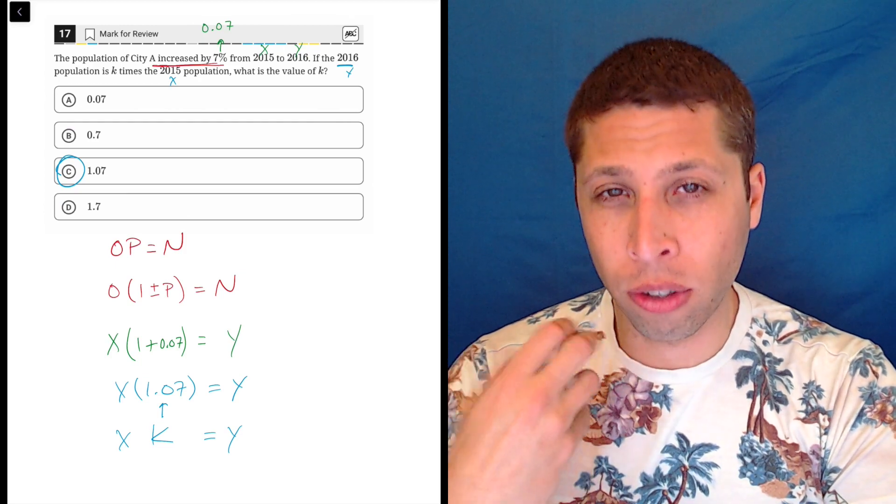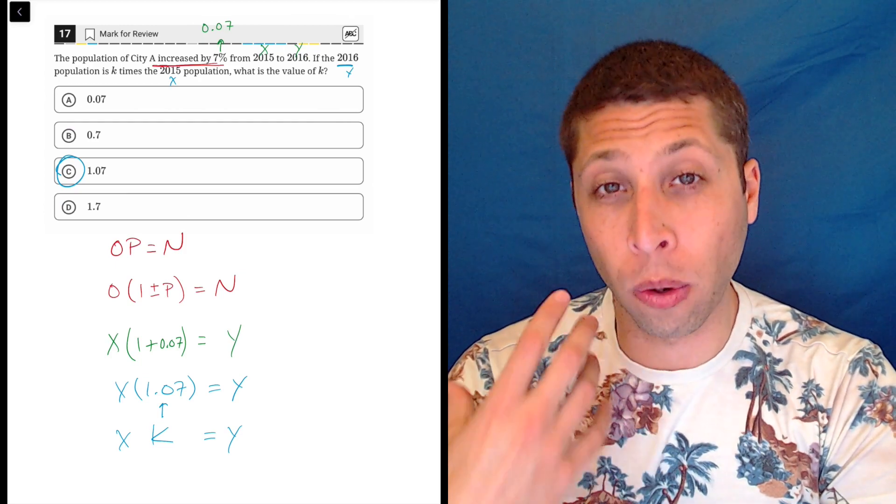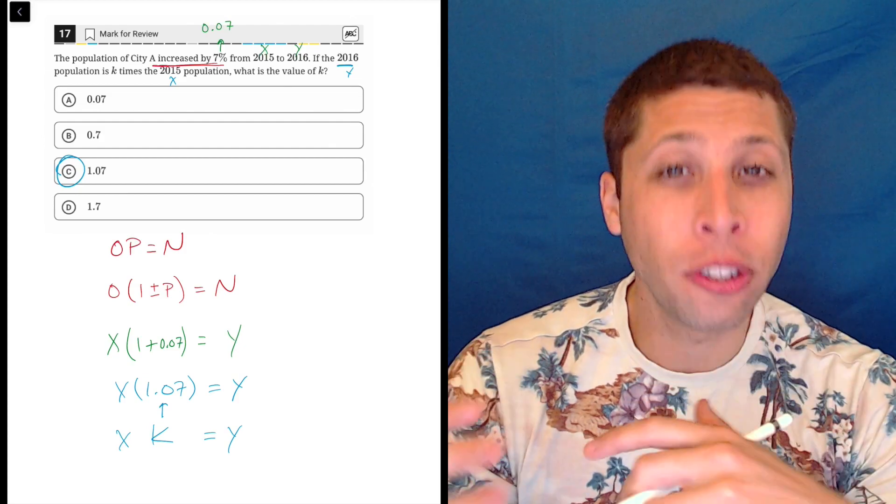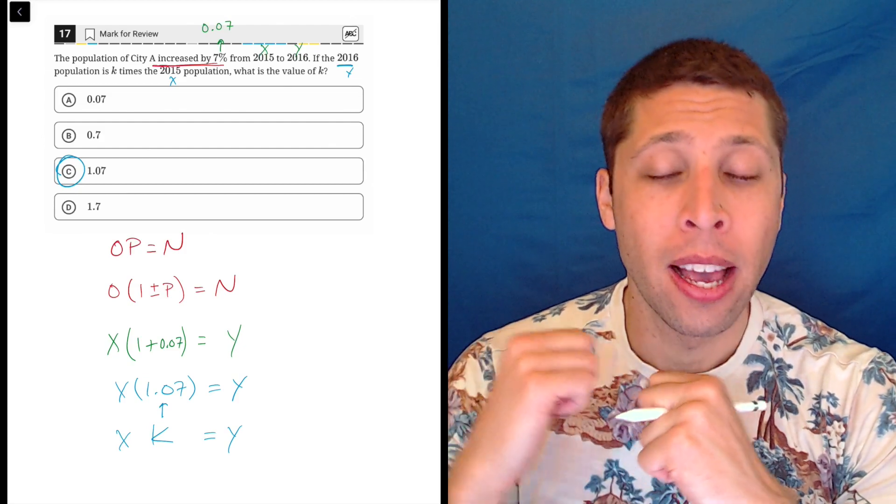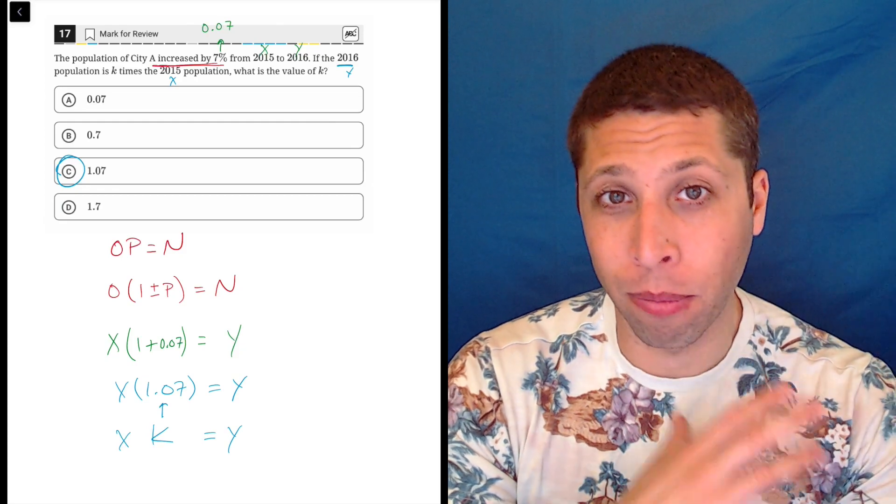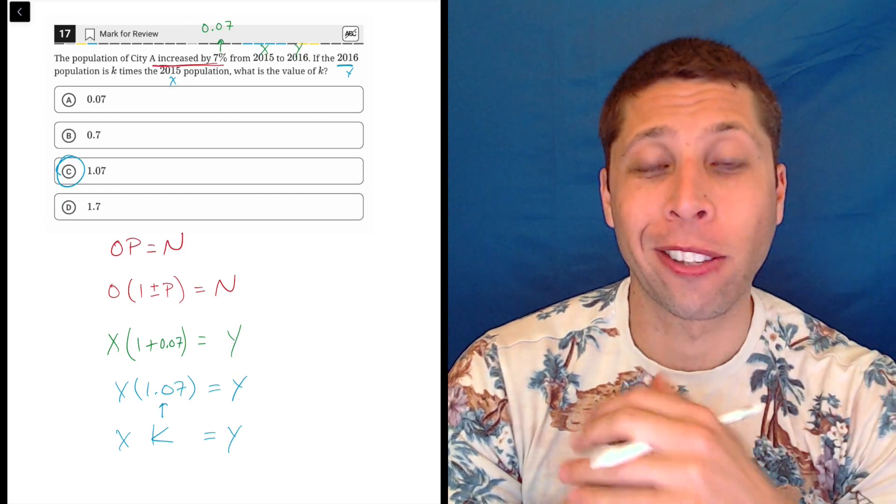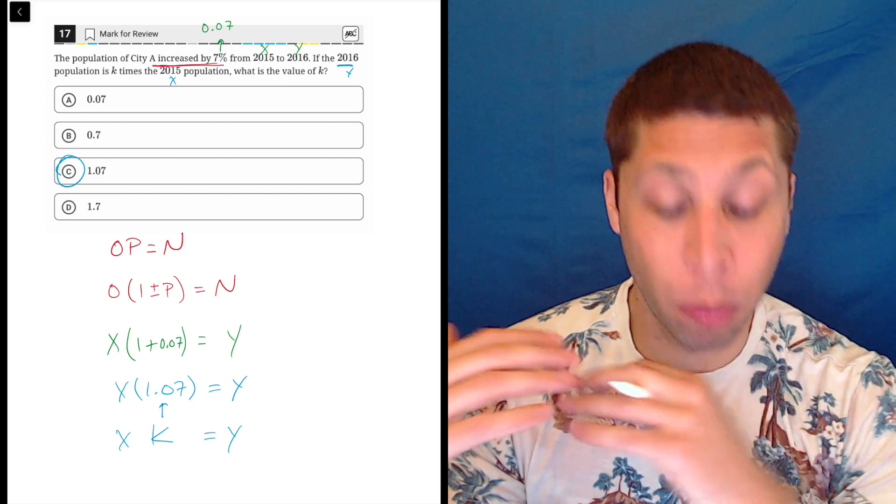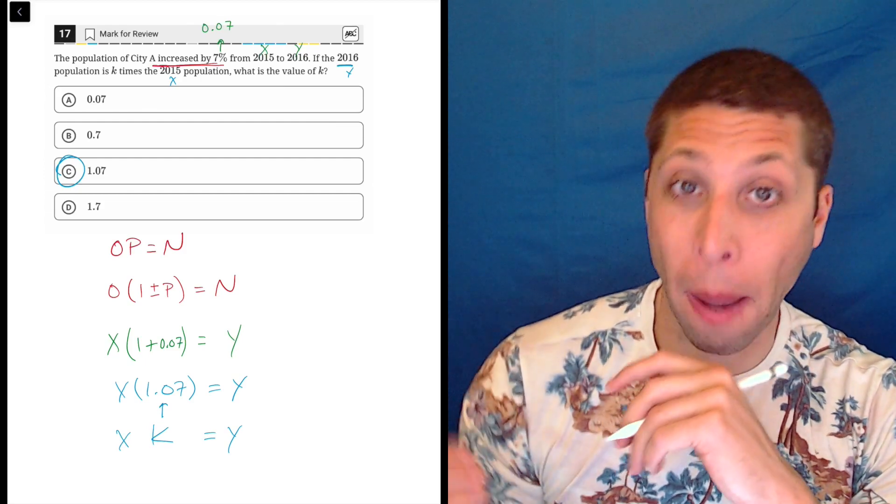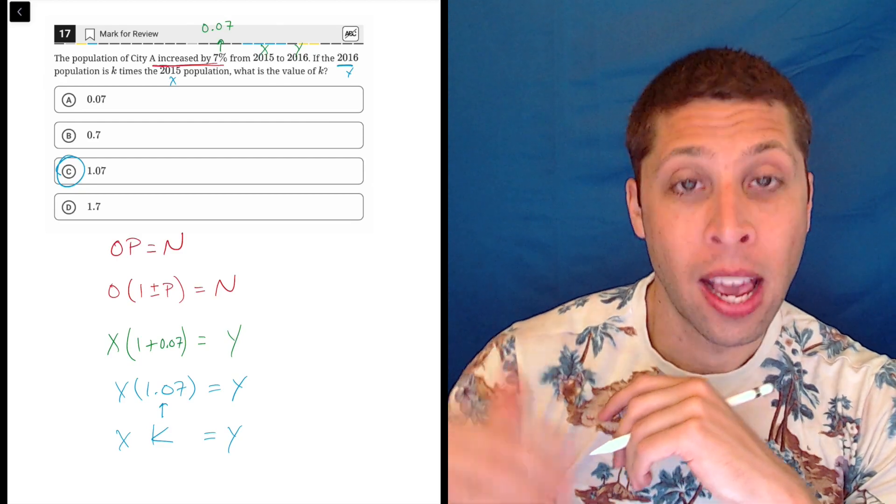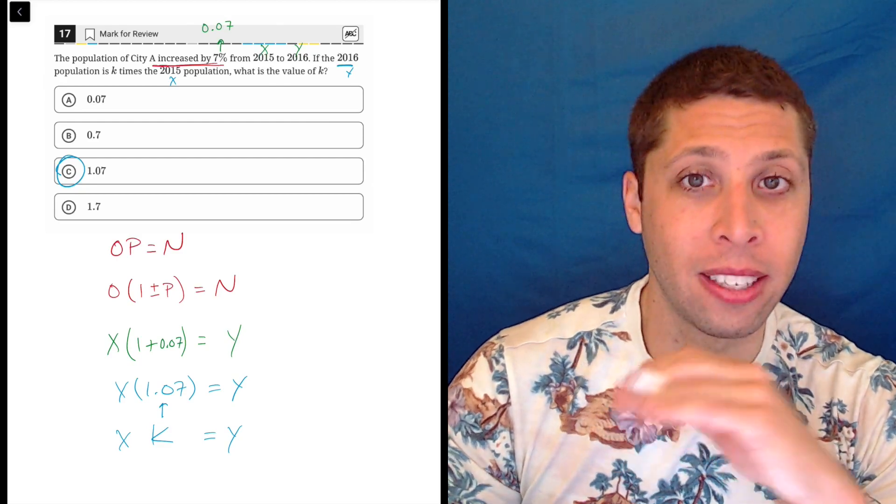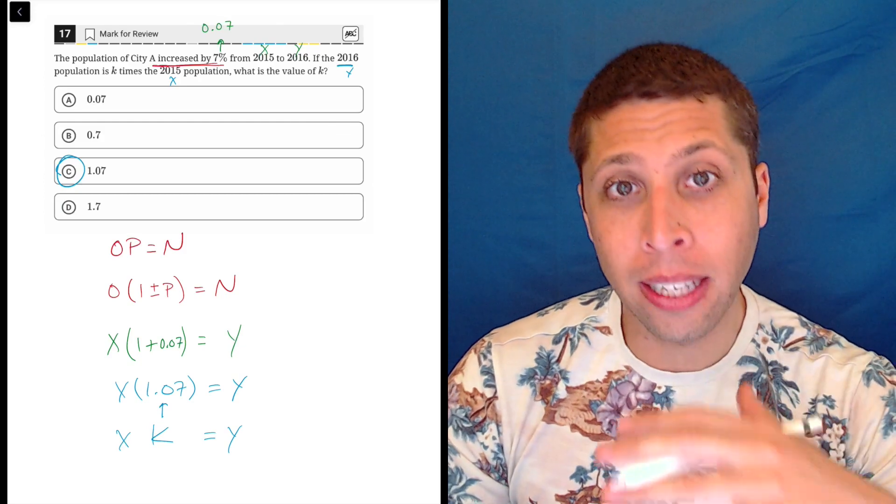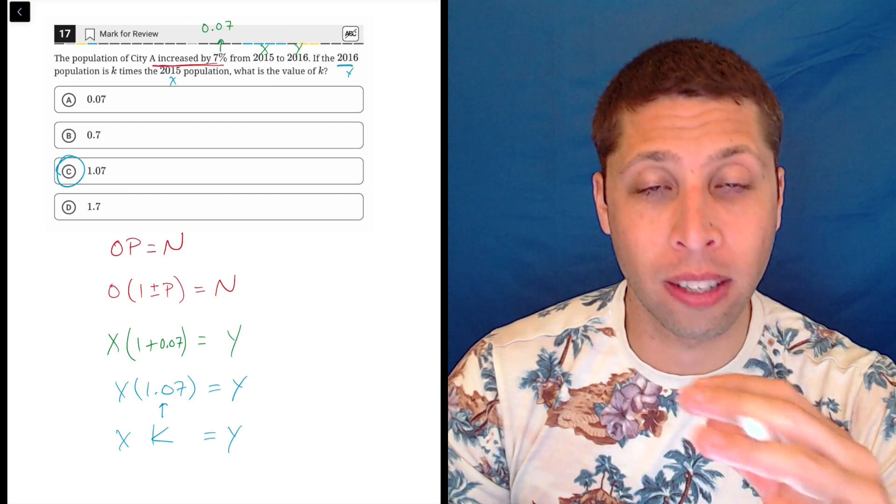But for those of you who are struggling with this, the OPEN formula is your way of kind of bridging this gap and trying to understand percentages mathematically the same way that we understand them when they're just talked at us. So this formula lets us kind of convert. And it is very useful for times when we're given the population of this city at 2015 or 2016, and then we can use the formula to calculate the other pieces. But it's a good starting point for understanding this conversion.